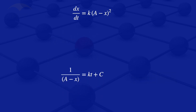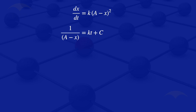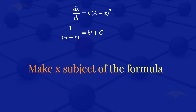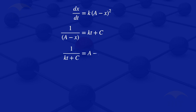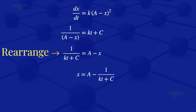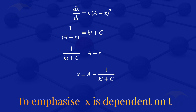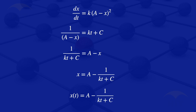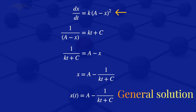That's the equation we have so far. To find the general solution, we need to make x the subject of the formula. Multiplying throughout by (a minus x) and dividing by (kt plus c) gives 1 divided by (kt plus c) equals a minus x. Rearranging, x equals a minus 1 divided by (kt plus c). Writing this explicitly as a function of t, the general solution is x(t) equals a minus 1 divided by (kt plus c).